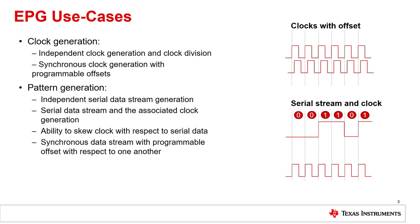This module can also be used to generate serial data streams and the associated clock, with the additional capability to skew clock signals with respect to the serial data. For synchronous data streams generated by the EPG, there is an additional option to offset the data streams with respect to one another.